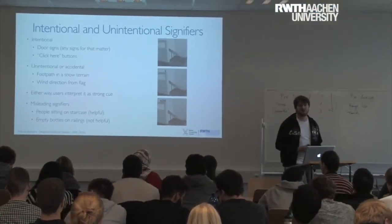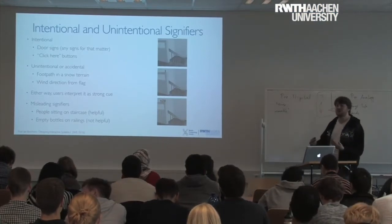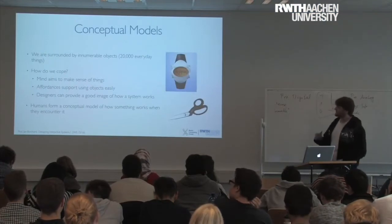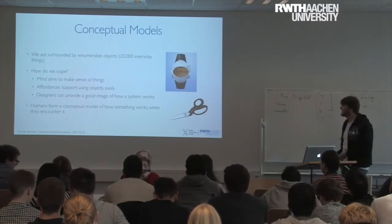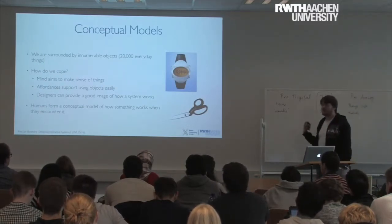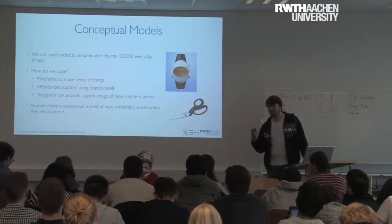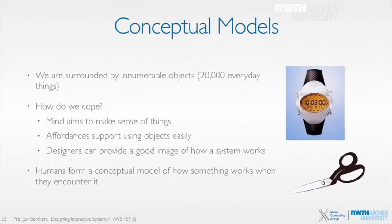Affordances and signifiers tell us a little about how humans approach new objects. Some people have actually counted that we encounter around 20,000 different everyday objects overall — and we're certainly not reading 20,000 manuals. So how do we know what we can do? This leads to the concept of conceptual models: when we encounter a new object, we immediately try to make sense of it. Affordances are part of what helps users build correct conceptual models.